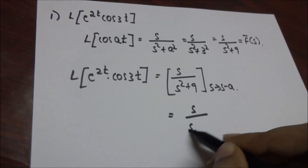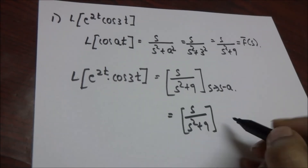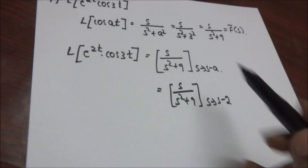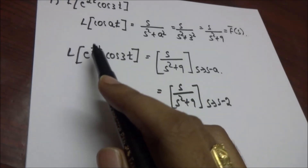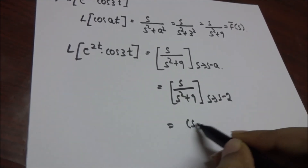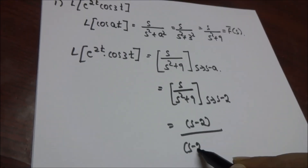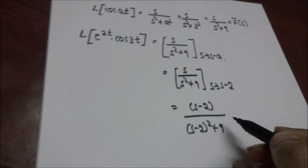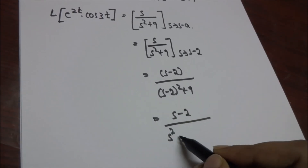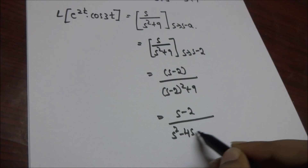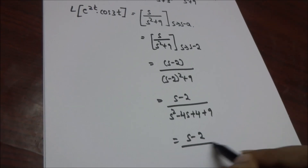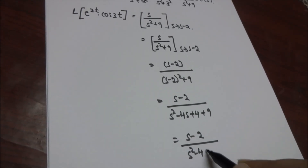Replacing s by (s minus 2), we get (s minus 2) divided by ((s minus 2)² plus 9). Expanding (s minus 2)² using the formula (a minus b)² equals a² minus 2ab plus b², we get s² minus 4s plus 4, plus 9, which equals s² minus 4s plus 13. Therefore, Laplace of e^(2t) cos(3t) equals (s minus 2) divided by (s² minus 4s plus 13).